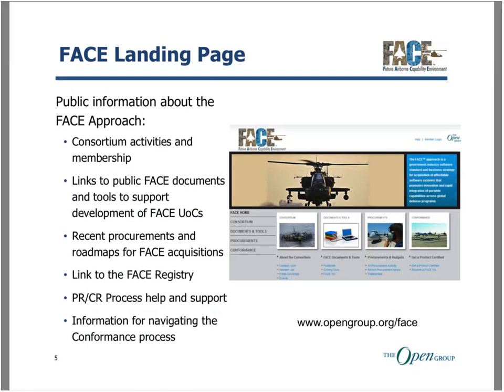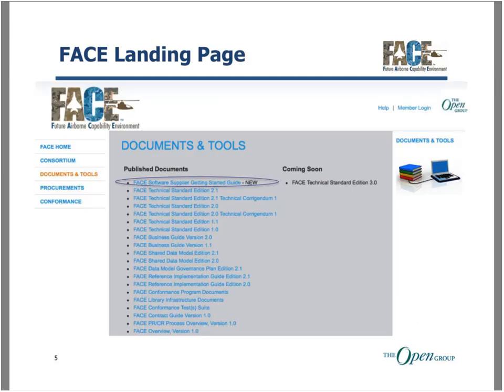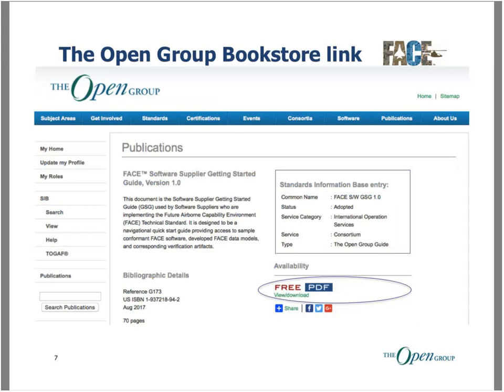For more information about the approach, you can find that on the FACE Consortium landing page at www.opengroup.org. We have a collaboration site for members only, and if you're interested in joining the consortium or want more information, send an email to og-face-dash-admin at opengroup.org. The landing page provides information on current consortium activities, membership, published documents and tools, recent procurements, a link to the FACE registry, and how to navigate the conformance program.